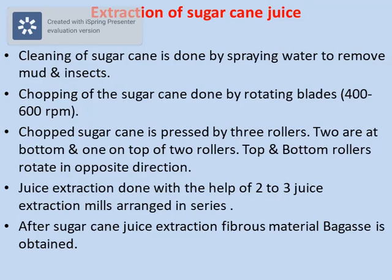After harvesting, extraction of sugarcane juice is done. First, cleaning of sugarcane is done by spraying water. This is done to remove mud and insects. Then chopping of sugarcane is done with the help of rotating blades, which have 400 to 600 RPM.